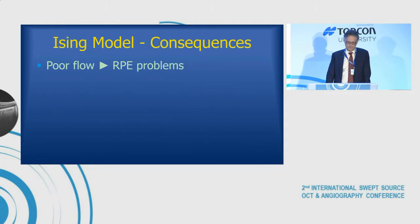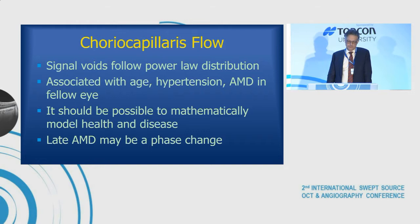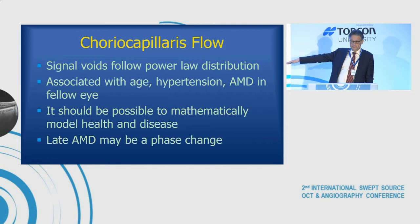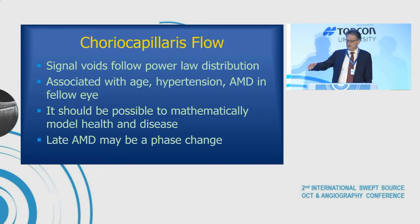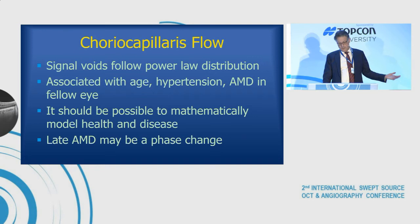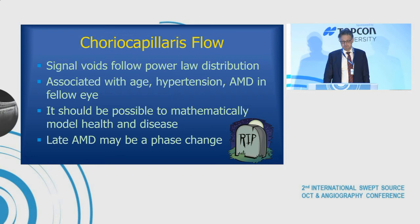We know there's an RPE and choriocapillaris interplay — when you get atrophy, you end up getting more atrophy. In summary: signal voids follow a power law distribution in humans, associated with age, hypertension, and AMD in the fellow eye. It's possible to mathematically model this and look at the health of someone's choriocapillaris to infer their biological age or health. Late AMD may be a phase change — just like atoms becoming magnetized. Geographic atrophy or CNV may really be a phase change we make before our final phase change. Thank you.